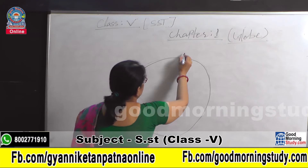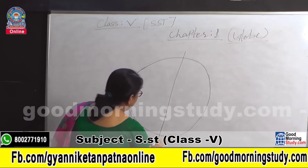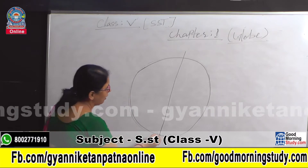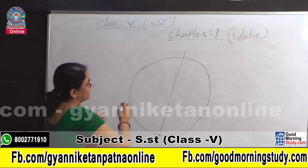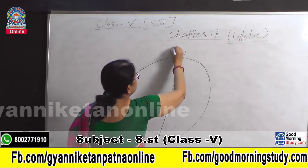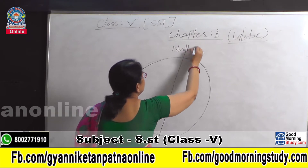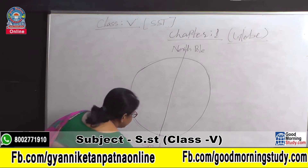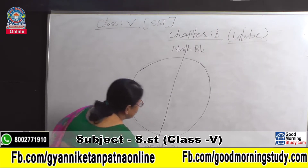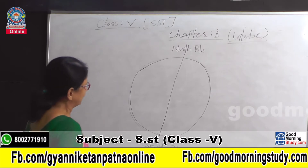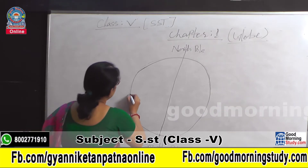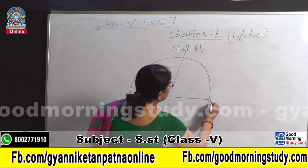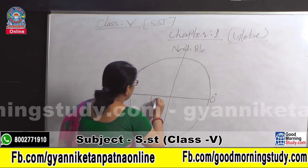A globe always rotates on its axis. This imaginary line is the axis, and it is divided into two poles — the top is the North Pole and the bottom is the South Pole. The globe also divides into two equal parts, and the line that indicates zero degrees is called the equator.